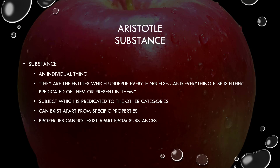For Aristotle, substances have two key attributes. First, a substance is a subject to which the other categories are predicated. He follows a subject-predicate structure where the subject is what you're describing and the predicate is the quality that it has. So if you say 'the apple is red,' the apple is the subject and red is the predicate. Similarly, 'the cat is furry' — cat is the subject, furry is the predicate.